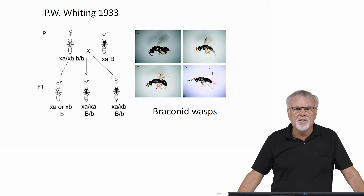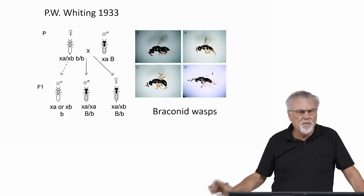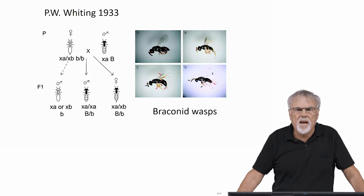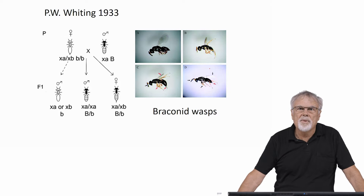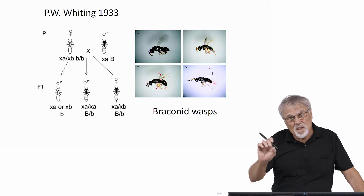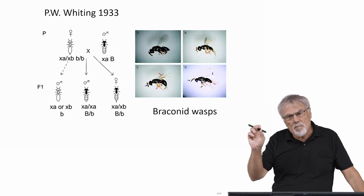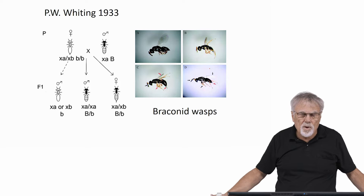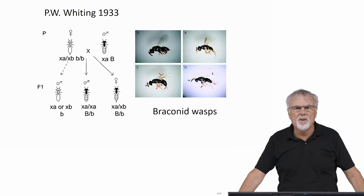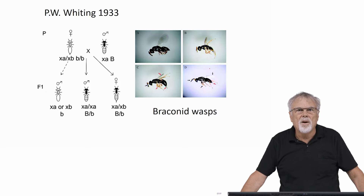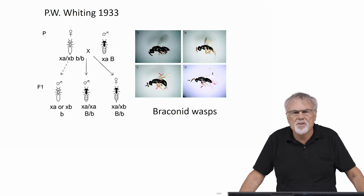He figured out the only way this could happen, given how they segregated, was if there was one gene responsible for determining sex. He determined that in order to be a female, you had to be heterozygous for this gene — you had two different alleles. And if you had two of the same allele, you were a diploid male. In this case, the diploid males survived but couldn't reproduce because their sperm weren't viable.